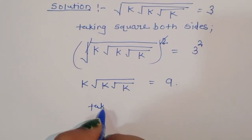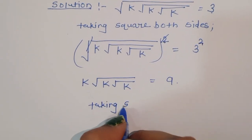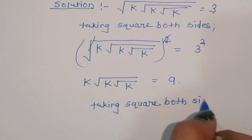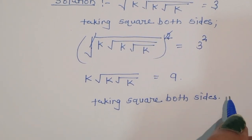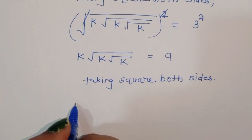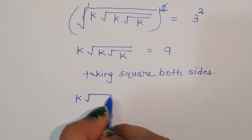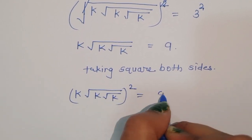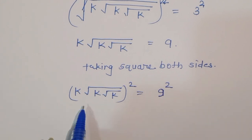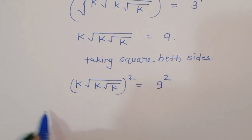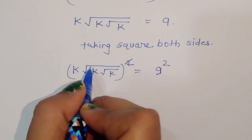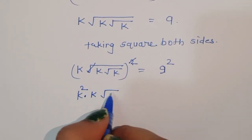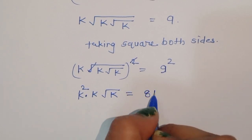Again taking square both sides. Then we will get k times square root of k times square root of k, whole squared, equals 9 squared. Now k squared, this square cancels from the square root. We get k squared times k times square root of k is equal to 81.